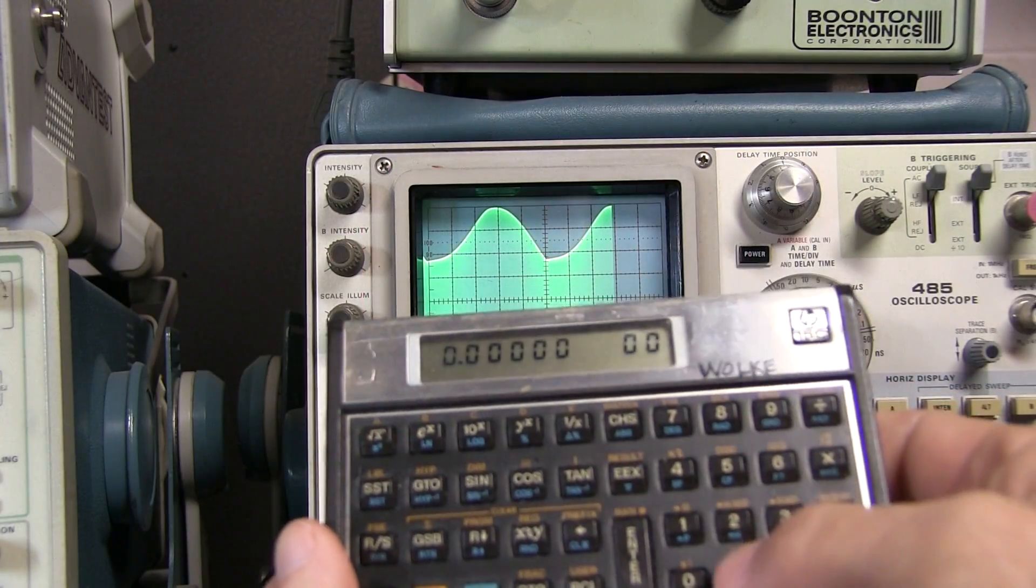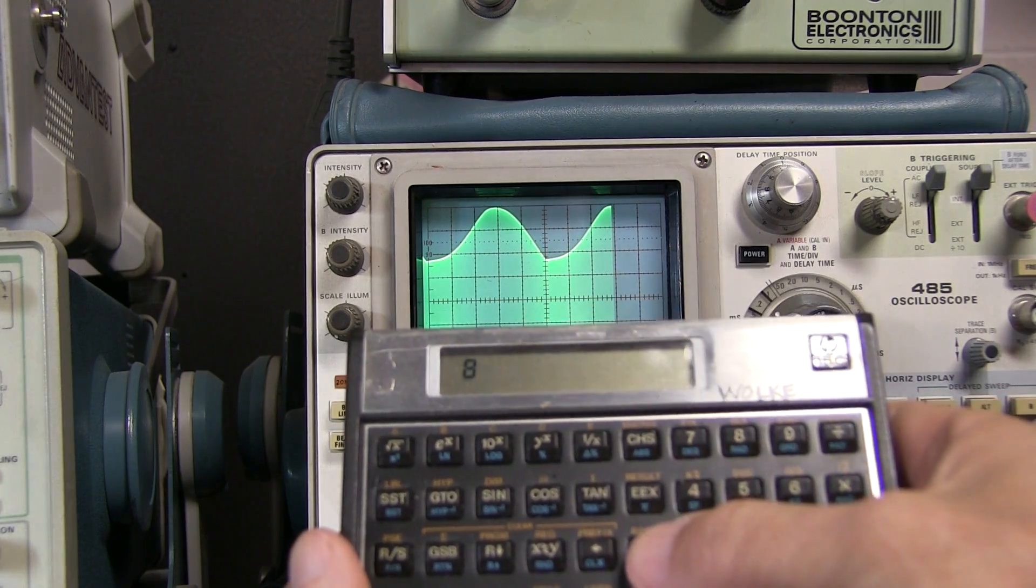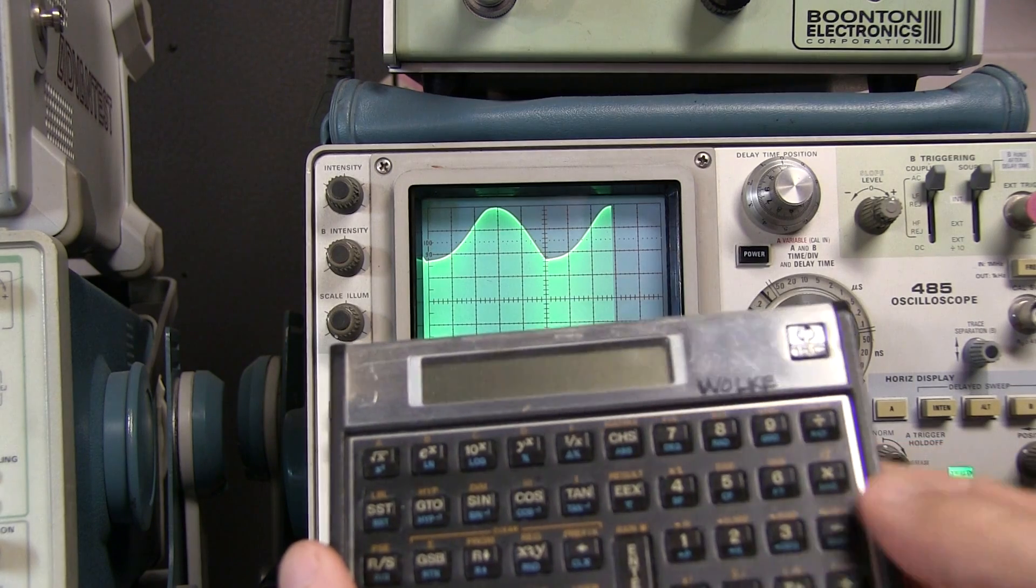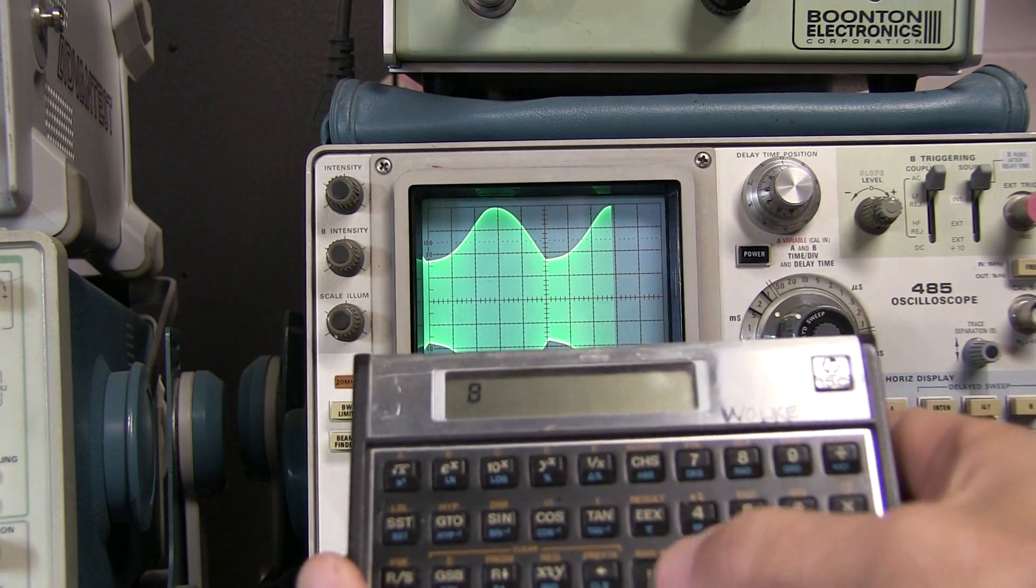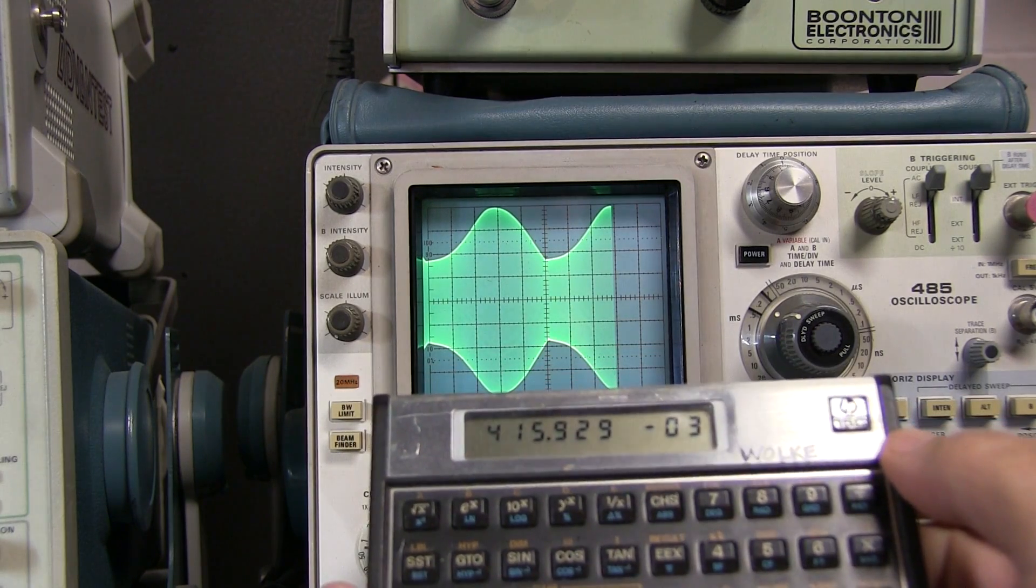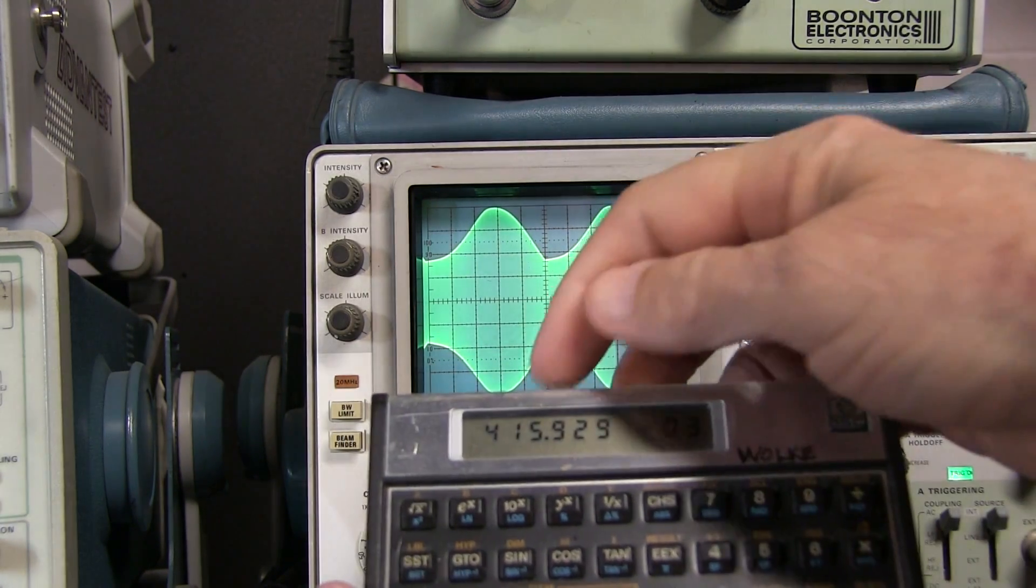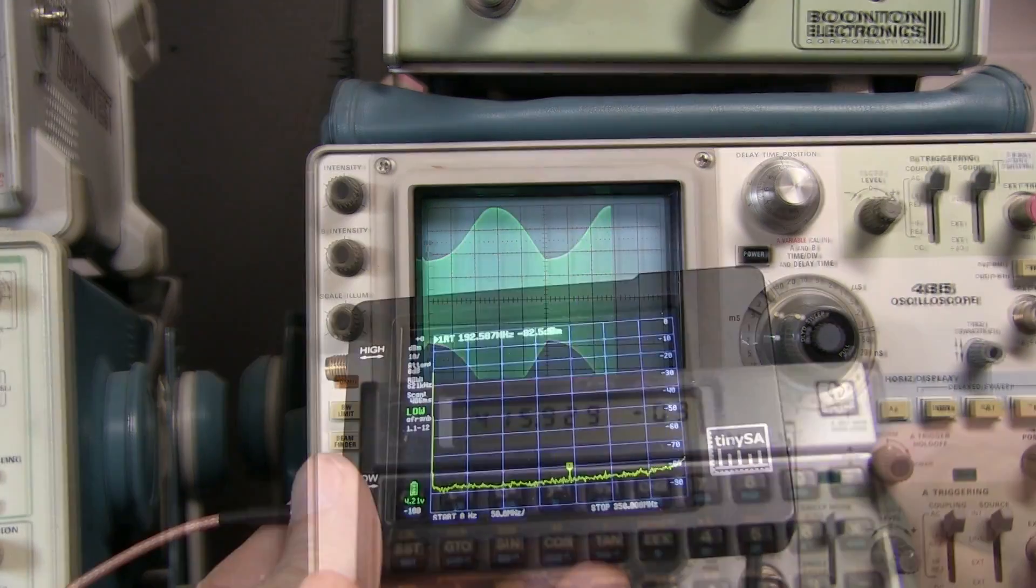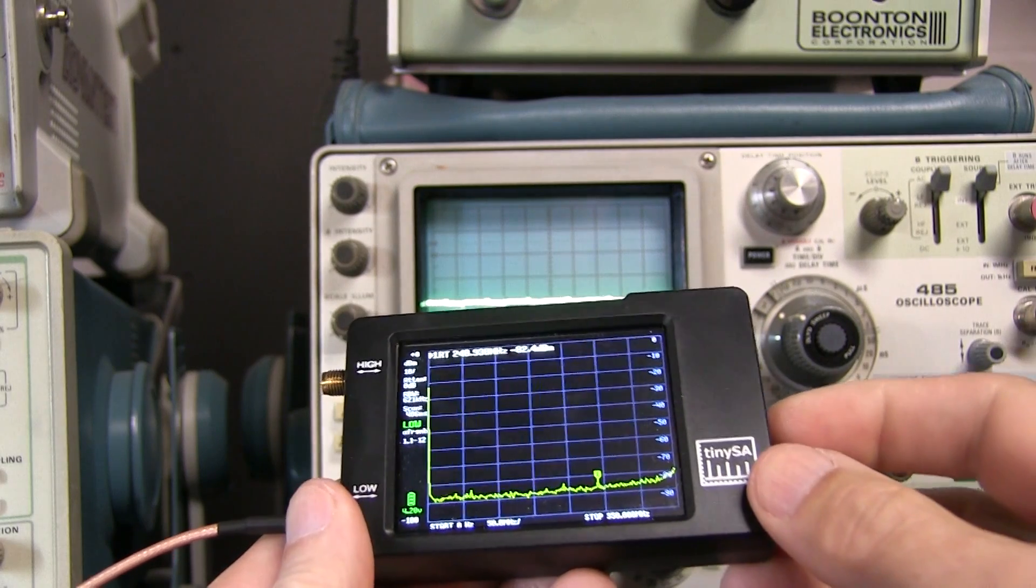So we can run that calculation. So we've got eight divisions for the peak to peak, 3.3 divisions for the trough. We'll subtract those. Again, hit 8, and 3.3, add those, and divide them. And that tells me that my modulation index is 0.415, or 41.5%.